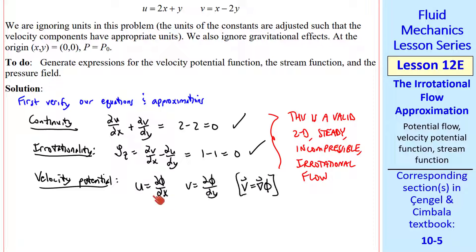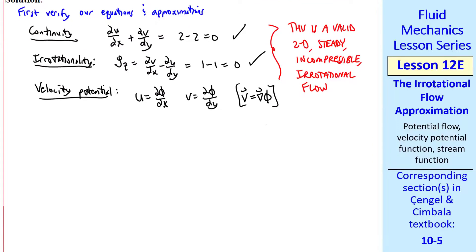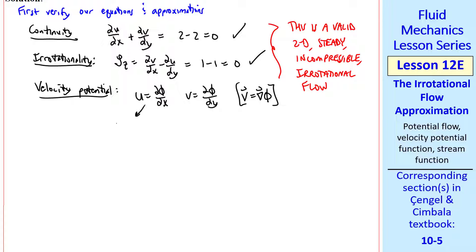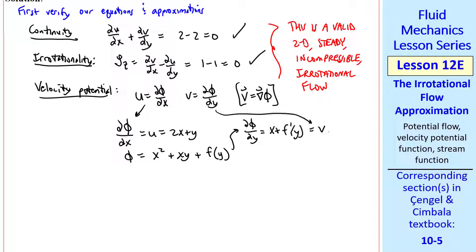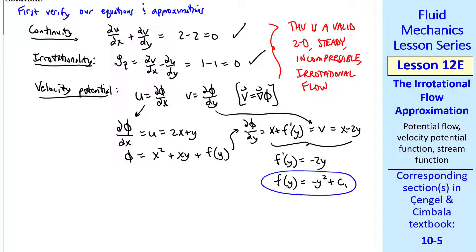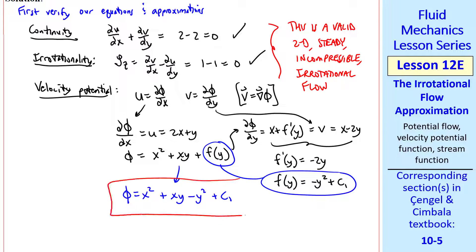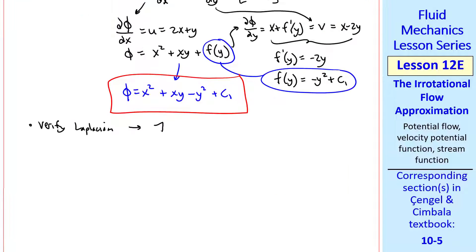To calculate the velocity potential, we write out the two components and follow the same partial integration procedure from previous lessons. Starting with del phi del x equals u equals 2x plus y, we integrate and add a function of the other variable, then differentiate with respect to y and set it equal to v to solve for f prime of y. Integrating gives f of y equals negative y squared plus c1, so phi equals x squared plus xy minus y squared plus c1. The constant c1 is arbitrary since we always use derivatives of phi. Verifying the Laplacian: del squared phi del x squared gives 2, del squared phi del y squared gives negative 2, so the Laplacian is satisfied.